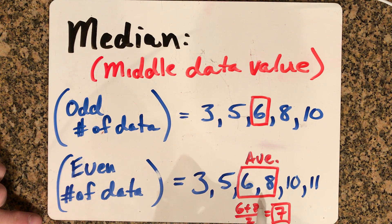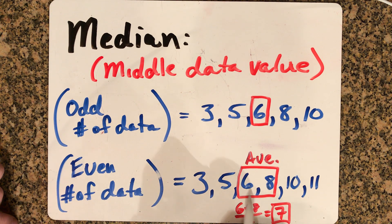If you have an even number of data, you take the two middle numbers, average those—add them together and divide by two—and that will be your median value. So seven is the median of this set of data.